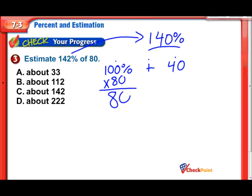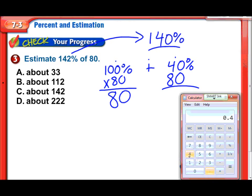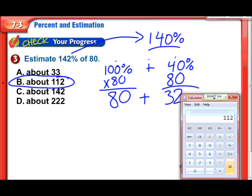100% of 80 is simply 80. 40% of 80 is 32. Put those two answers together: 80 plus 32 equals 112. So 142% of 80 is approximately 112.